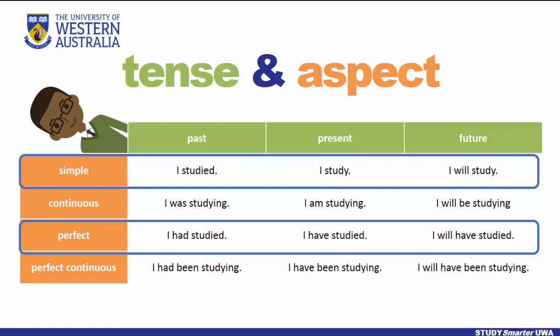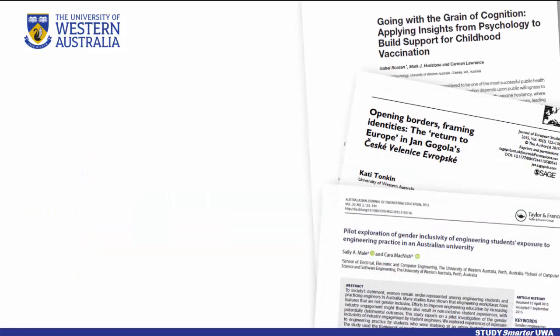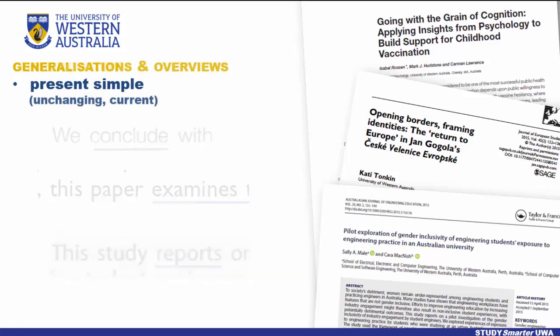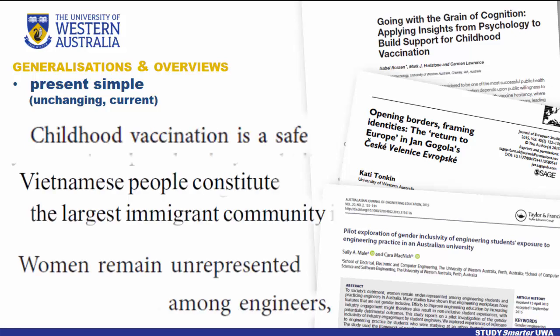Let's have a look at those patterns. When discussing the current study — what this particular book or journal article does, is, and proposes — authors tend to use the present simple. You would also use the present simple for generalizations, overviews, and established facts.